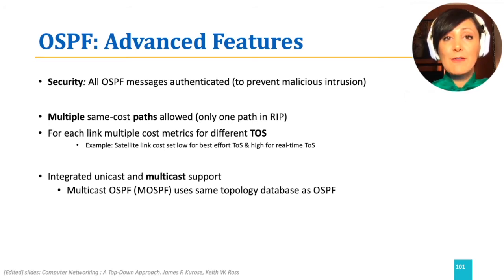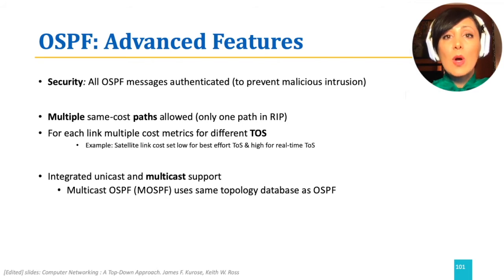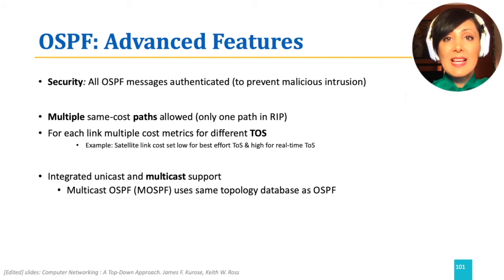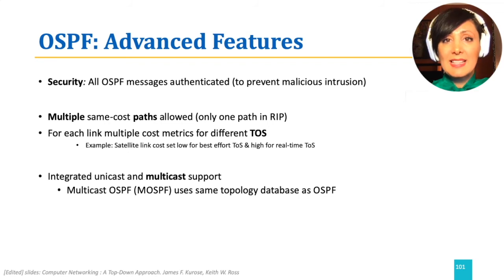OSPF maintains ECMP, which means Equal Cost Multi-Paths. It finds and keeps all the paths that have the same least cost to the destination. This is important for a number of reasons such as load balancing and traffic engineering, which we will learn about in more advanced discussions.